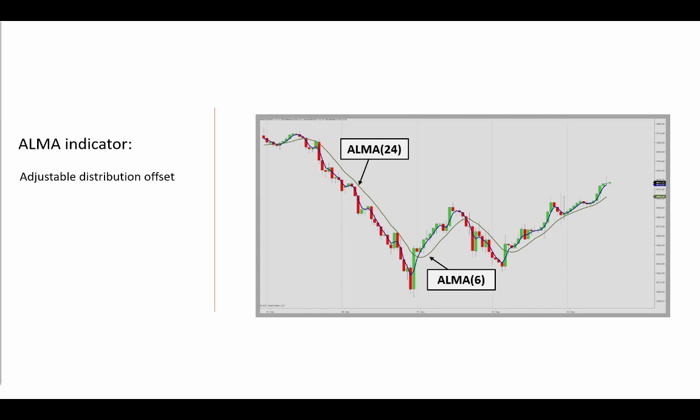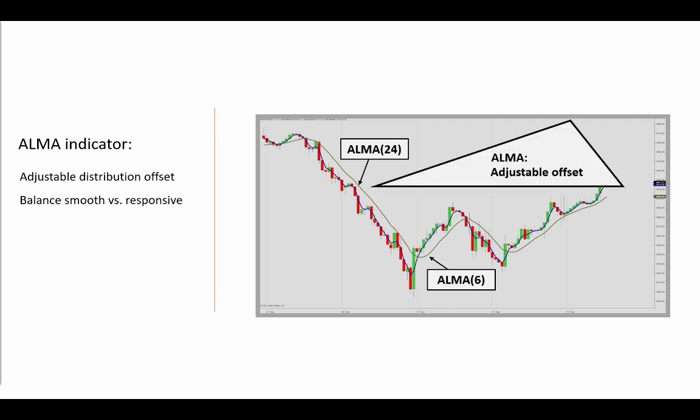The ALMA indicator has a similar approach to the weighted moving average and the triangular moving average, but allows for an adjustable Gaussian distribution offset. By default, it places the weight towards the end of the lookback period. There is also a sigma parameter that will change the shape of the filter — a large sigma value applies a wide standard deviation, whereas smaller values will narrow that focus. So we can go ahead and look at this in the chart and indicator dialog box to see how to strike a balance between information value and information confidence.